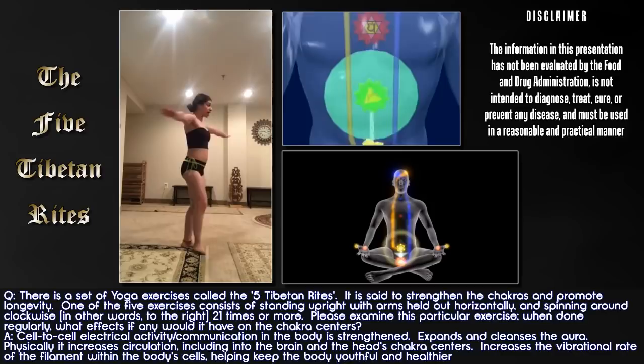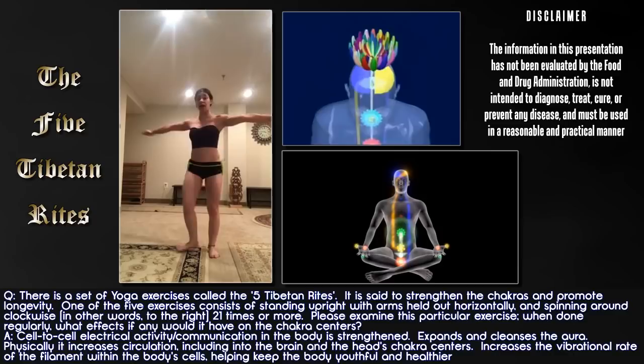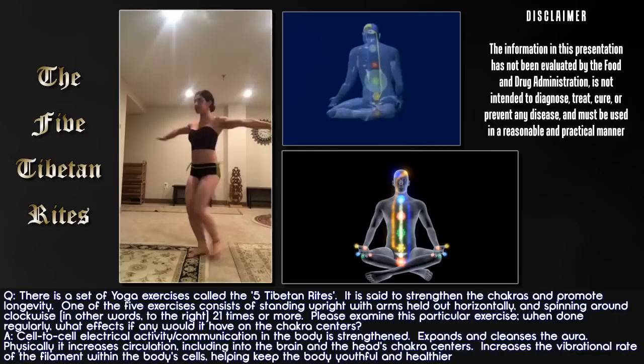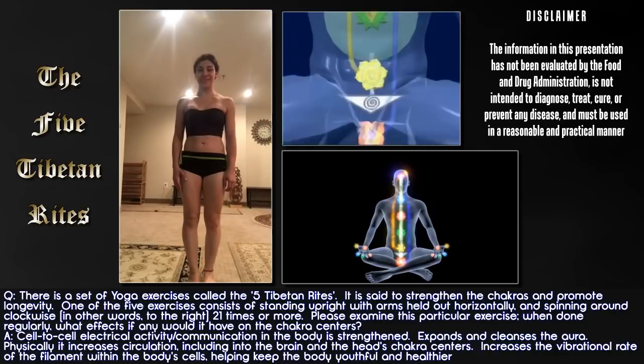It is said to strengthen the chakras and promote longevity. One of the five exercises consists of standing upright with arms held out horizontally and spinning around clockwise, in other words, spinning to the right, 21 times or more. Please examine this particular exercise, spinning clockwise.